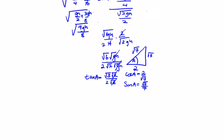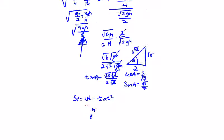Now we find the time for the next bounce using sy = ut + ½at². The initial velocity in the j-direction is root 7gh/8 times sin a, which is root 3 over root 7 — so the root 7's cancel. The acceleration in the j-direction is minus g cos 30, which is minus root 3 over 2 times g.